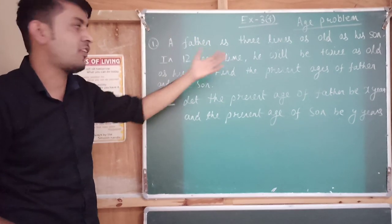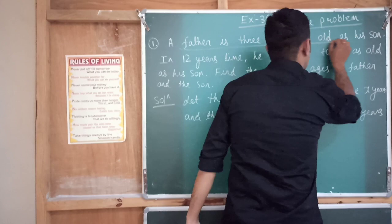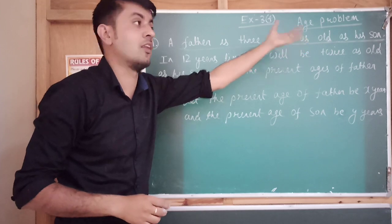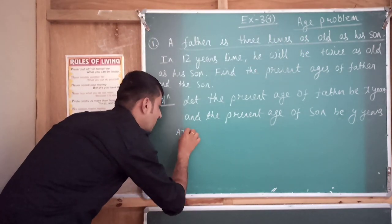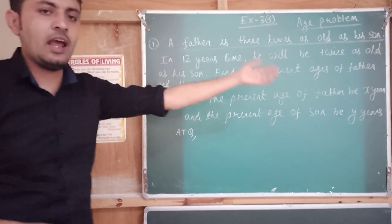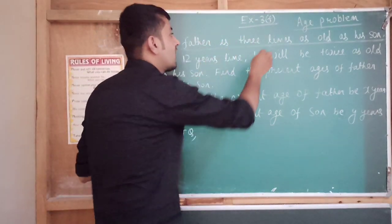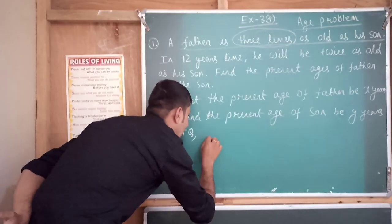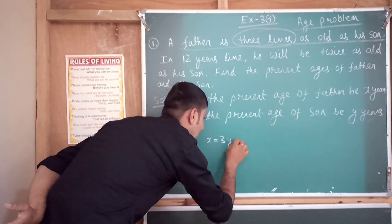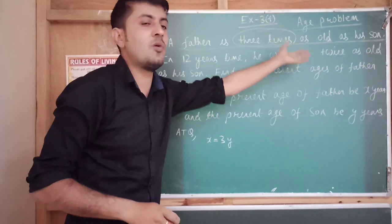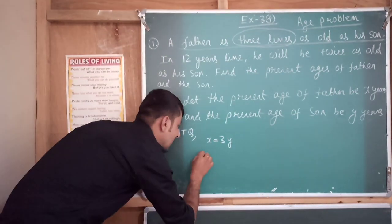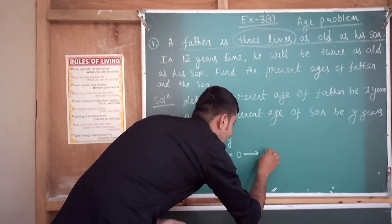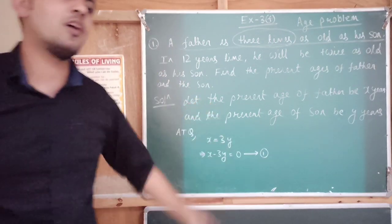Looking at the question, it says the father is three times as old as his son. So according to the condition, the age of the father is x, and they have said three times the age of the son. So x is equal to 3y. Doing the simplification: x minus 3y is equal to 0. That is equation number 1.